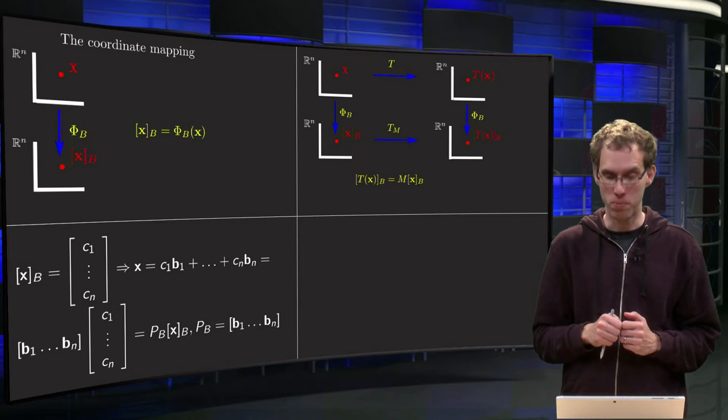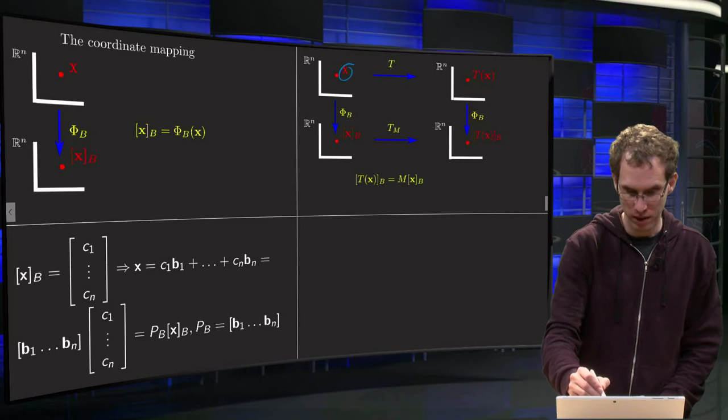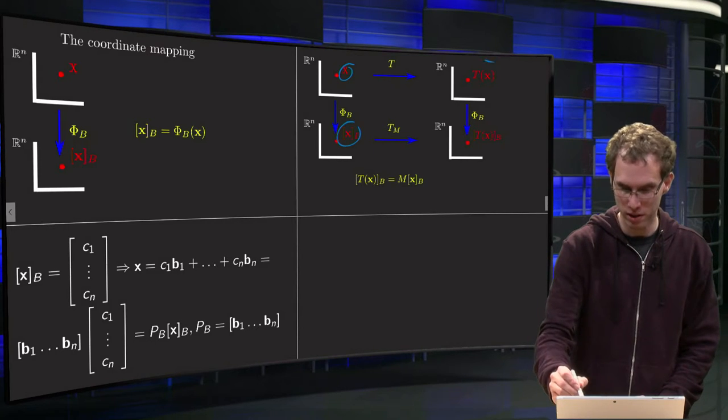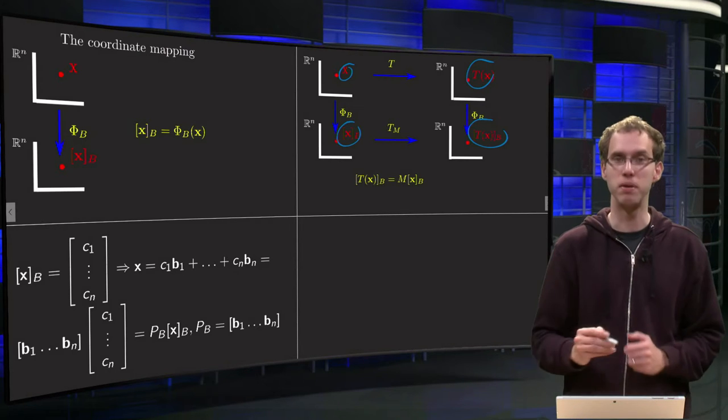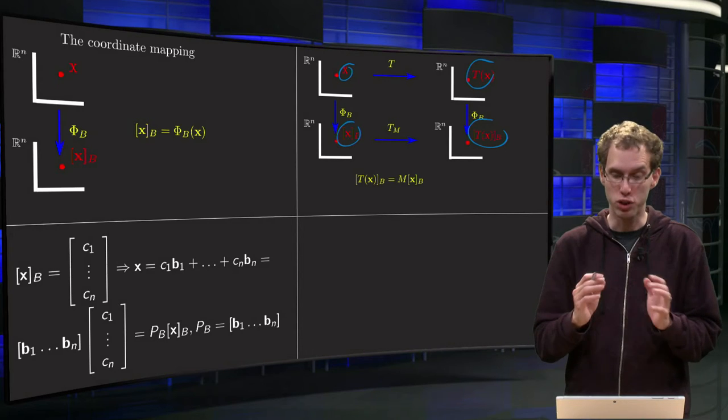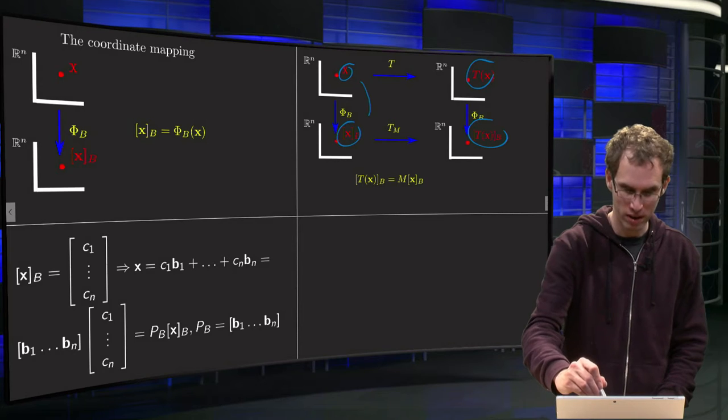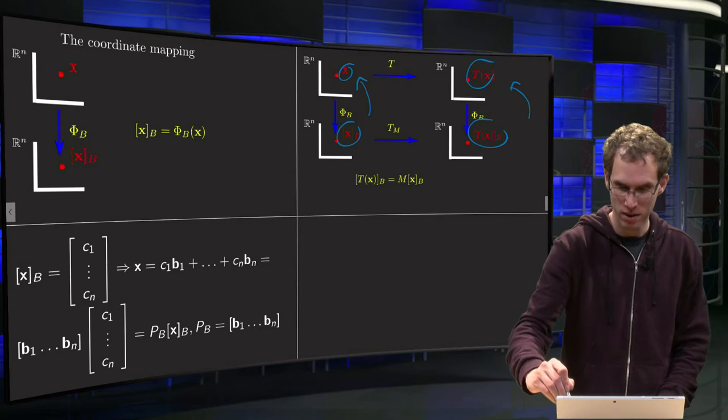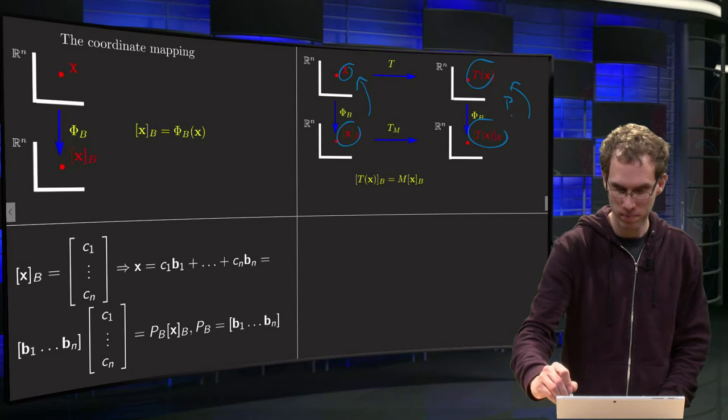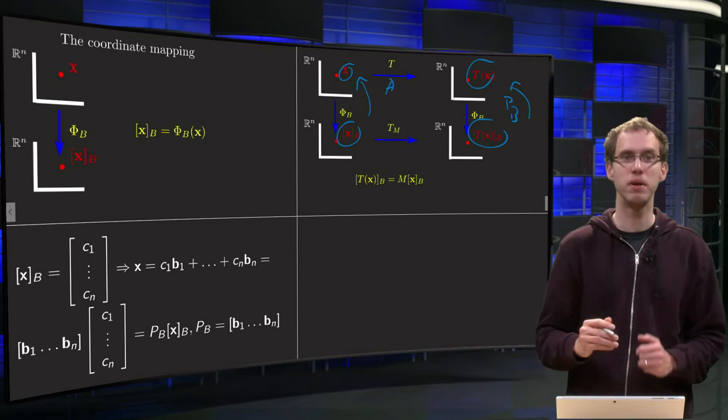Now we are going to combine this. So we have an x over here and xb over there, T of x over here and T of x in the basis b over there. And we know that T of x in the basis b equals some matrix M times the coordinate vector xb. Now we know that we can go up here and there with the matrix Pb, and we can go to the right over there with the matrix A.